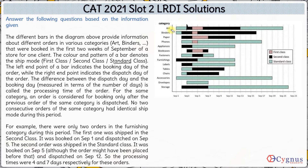So the processing time for that order is two days. Next, for the same category, an order is considered for booking only after the previous order of the same category is dispatched. For the art category, the next order can only be taken once the previous order has been dispatched, which you can clearly see — the next order date is only after the dispatch of the previous order.